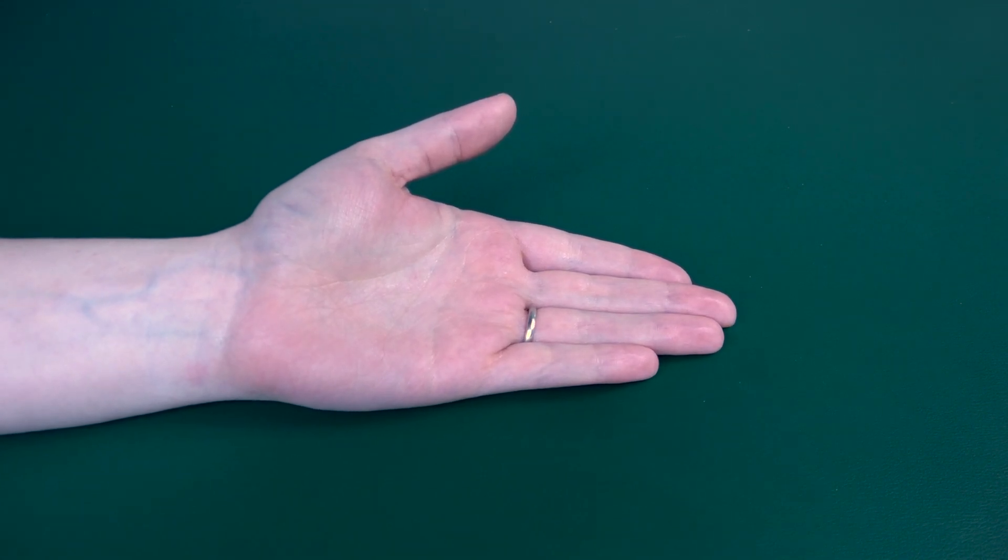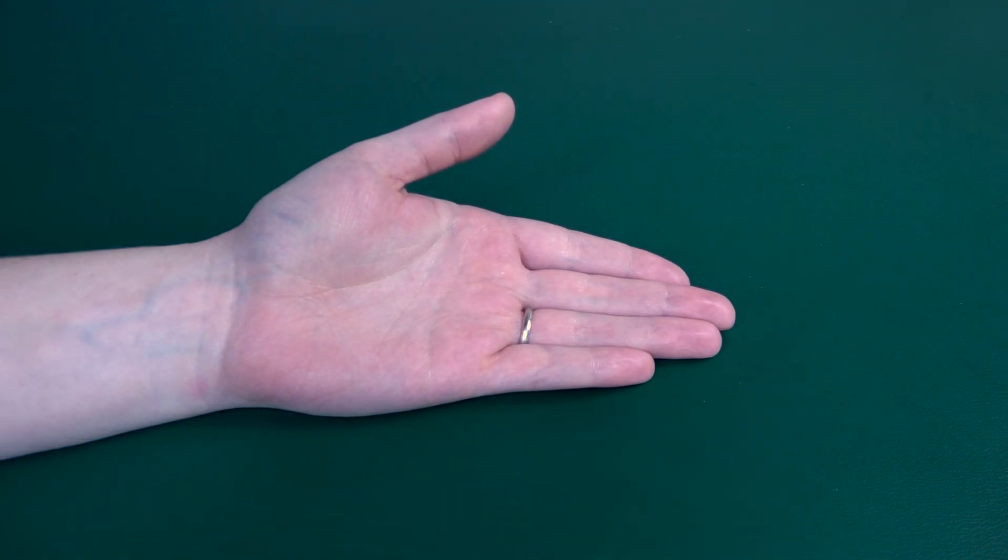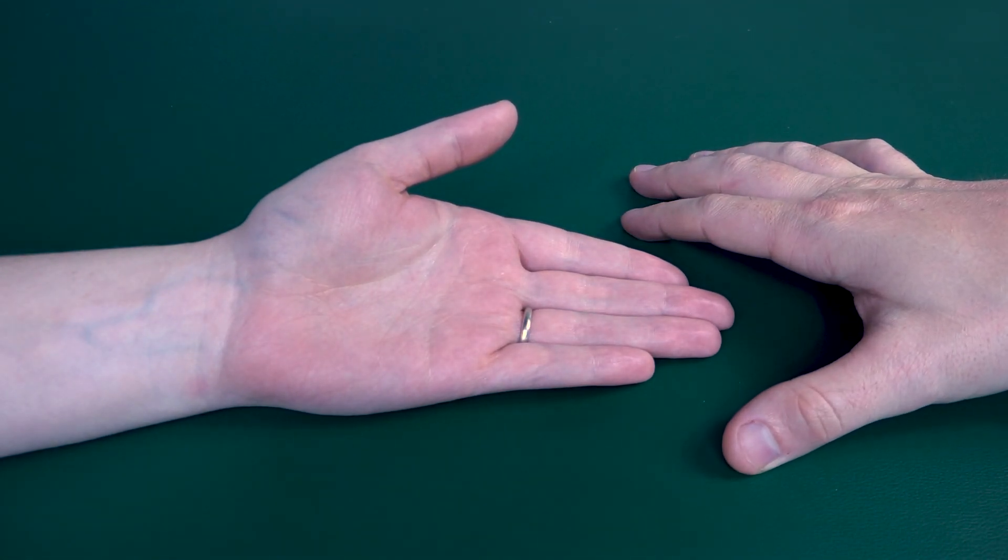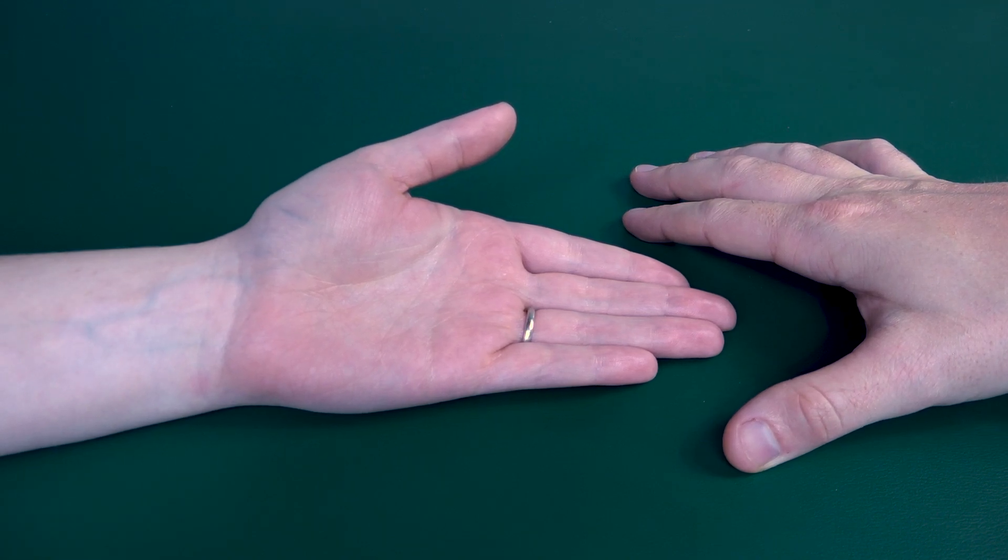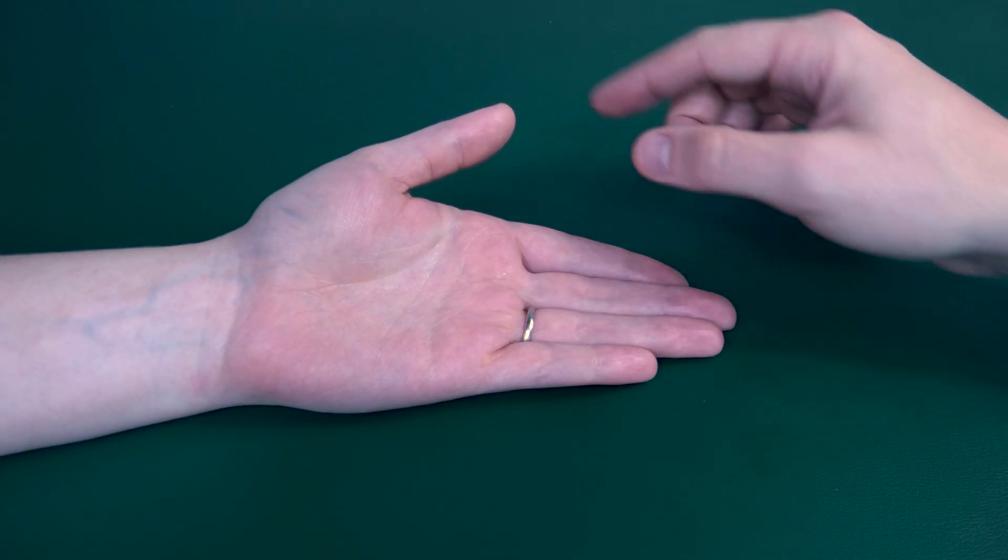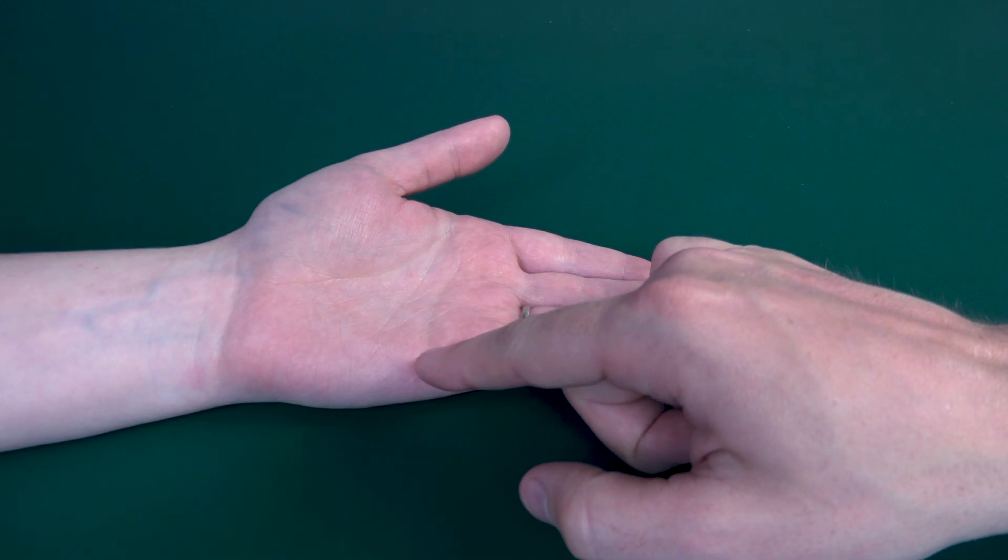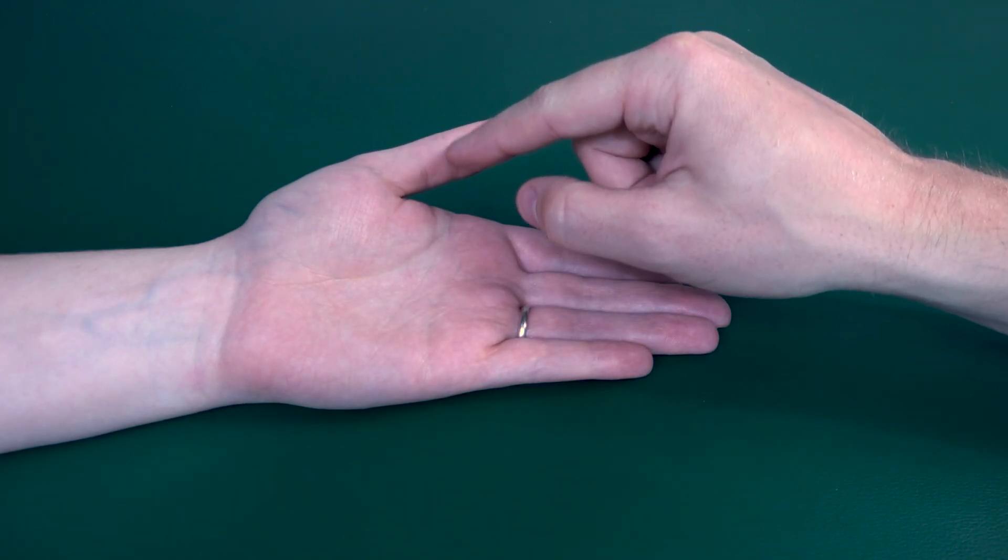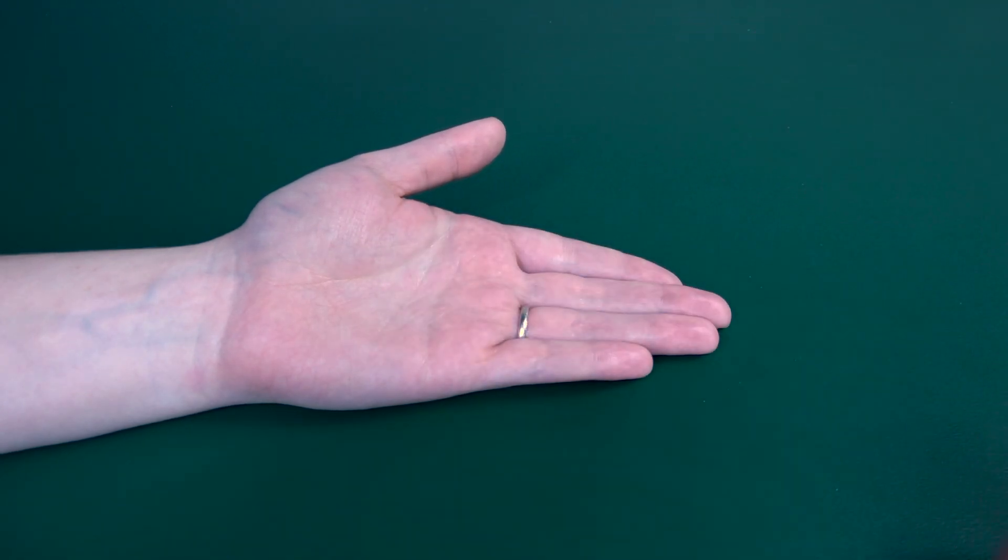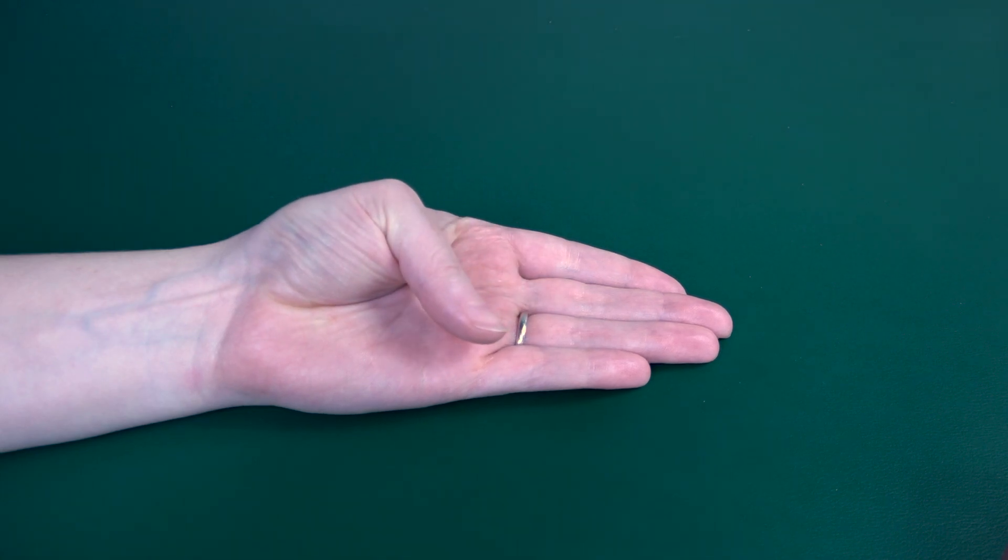Testing thumb MP flexion: your patient's hand will be in a supinated position resting on the table or flat surface. First, have your patient bring their thumb all the way across their palm but keeping the distal part of their thumb extended. Go ahead and do that for me, Rachel. Now bring it back.